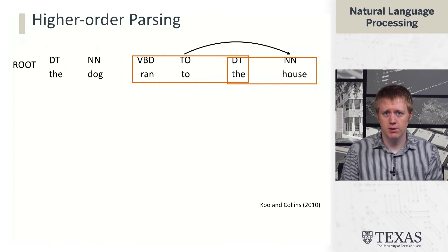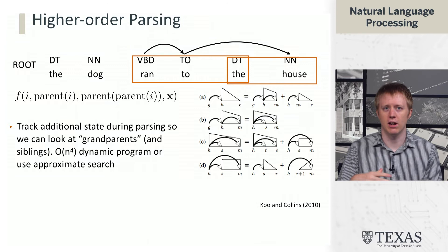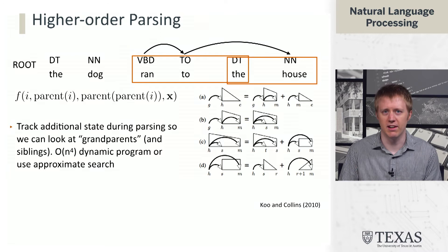Terry Koo and Mike Collins explored ways of simultaneously looking at multiple arcs — so-called grandparent features and sibling features. You can go even more sophisticated than this, but it requires a very complex dynamic program, adding an extra factor of n. The main issue is the implementation overhead and complexity to actually build this.